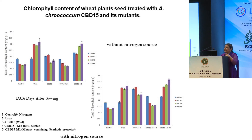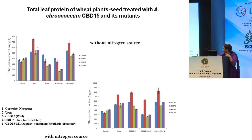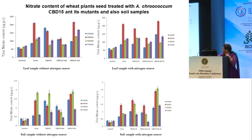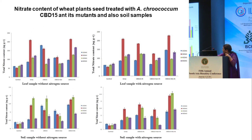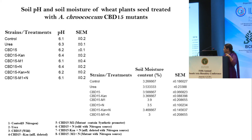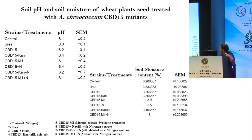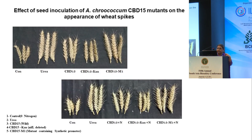Other parameters were also measured in these preliminary pot experiments conducted in a net house. We studied chlorophyll content, total leaf protein, and nitrate content. We also found there was not much effect on soil pH or soil moisture — it was comparable to the native strain. Spikes were also studied; we took the plants to maturity and examined the results.